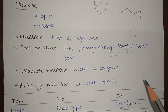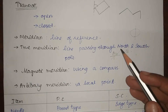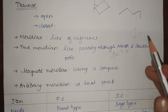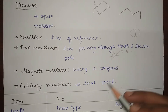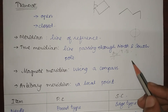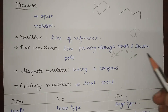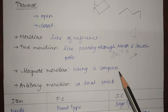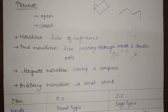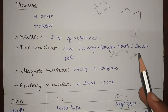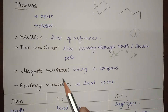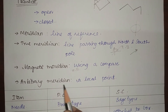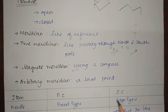Next is the magnetic meridian. When a compass needle is suspended freely without any local attraction, it points towards the magnetic north. The direction in which the needle points is the magnetic meridian, which can be found using a compass. Any horizontal angle taken using the magnetic meridian is called the magnetic bearing.